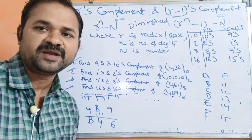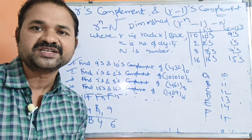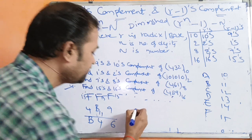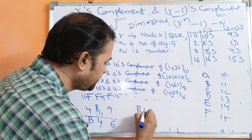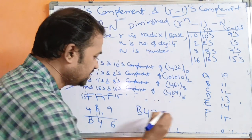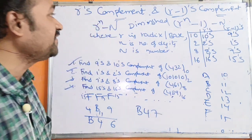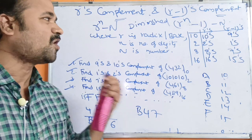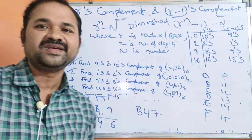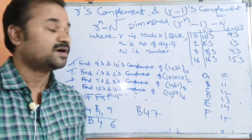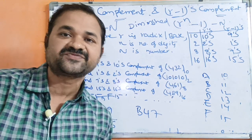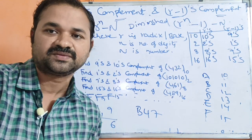For 16's complement, use 15's complement plus 1: B46 plus 1 = B47. In this way, we can calculate the complement for any number. This concludes the discussion on R's complement and R-1's complement.